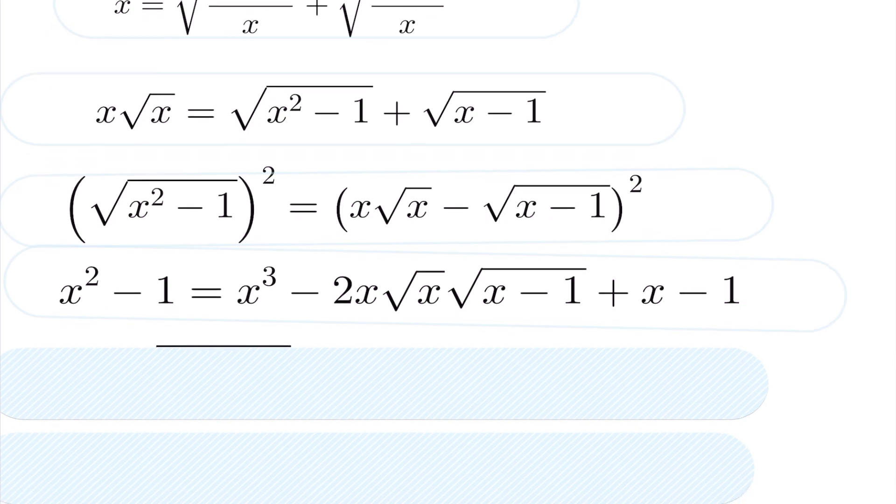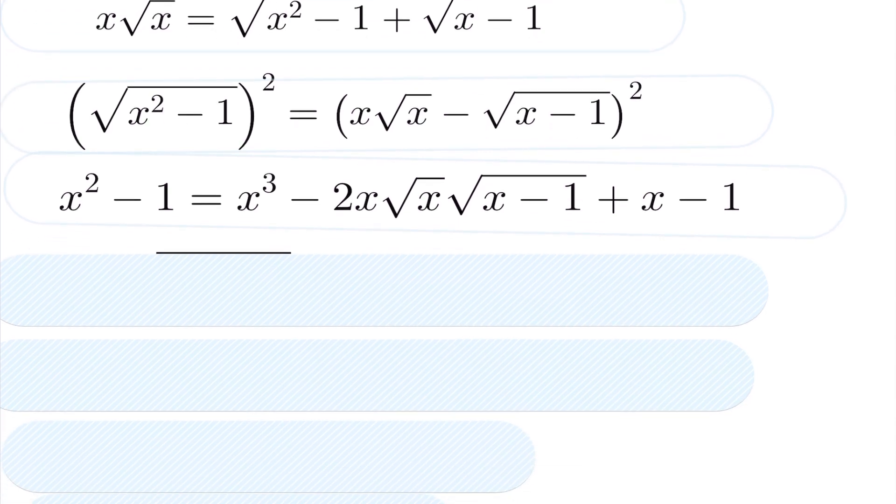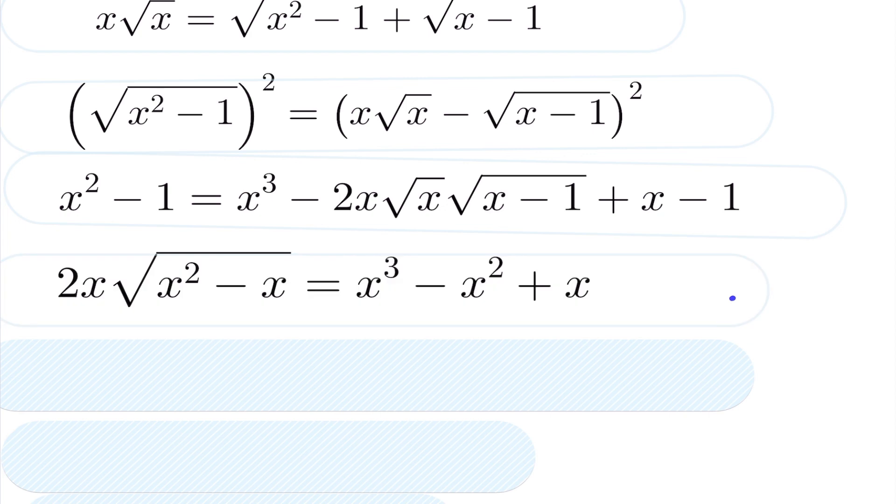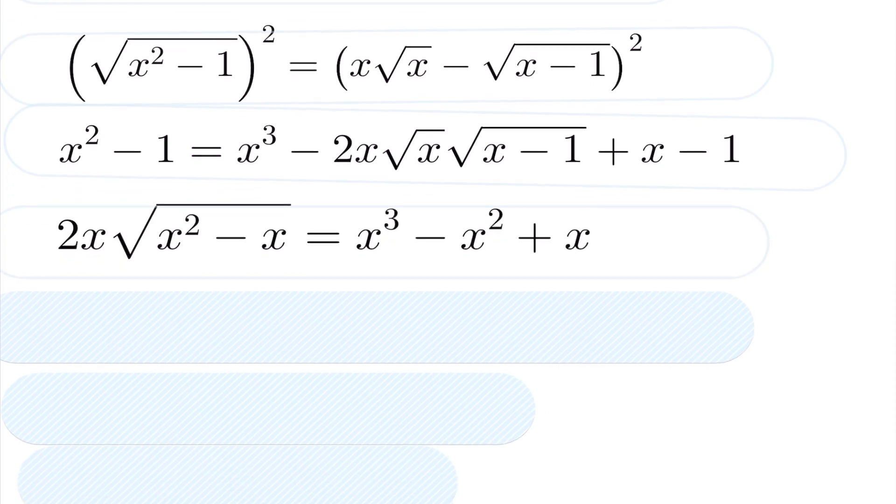Now we're going to bring everything to one side, trying to isolate the root. Doing so gives us the following. You'll notice I also took the square root of x, which we see right on this side of the equation, and I put that back underneath the root here. So you have 2x equals the square root of x squared minus x is equal to x cubed minus x squared plus x.